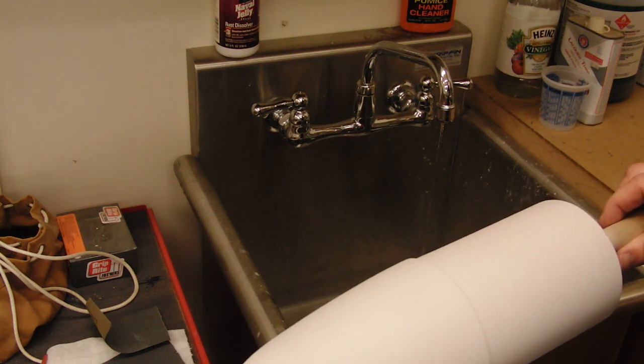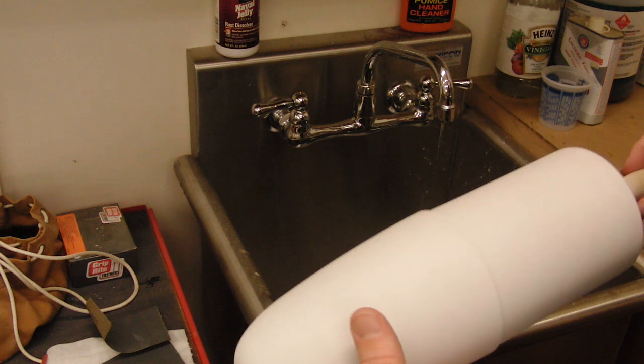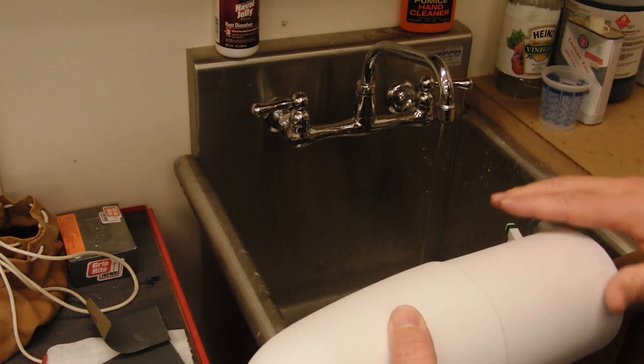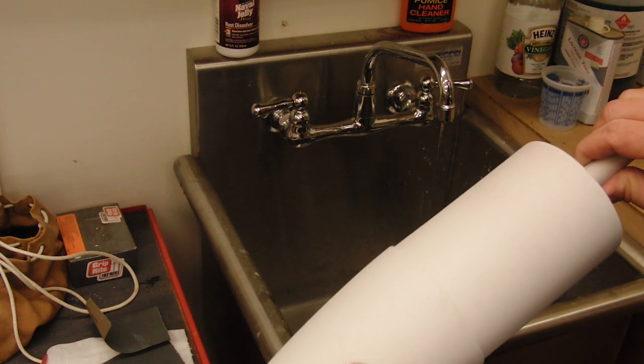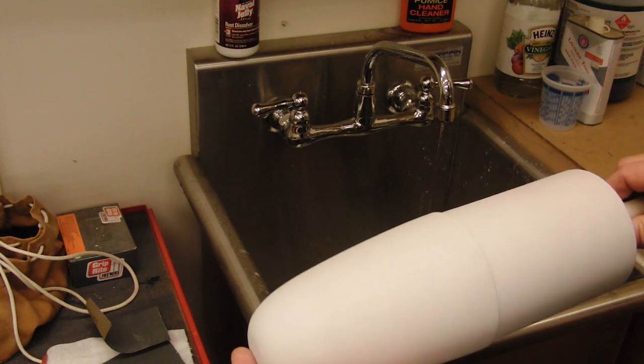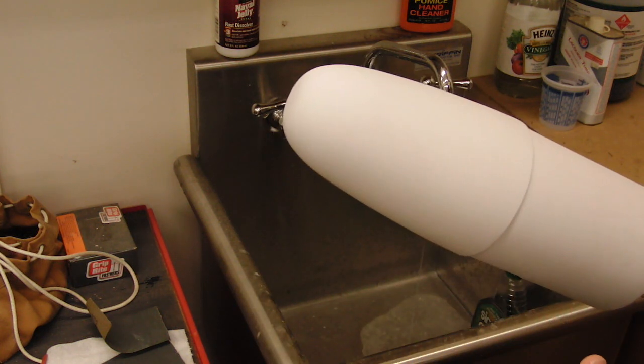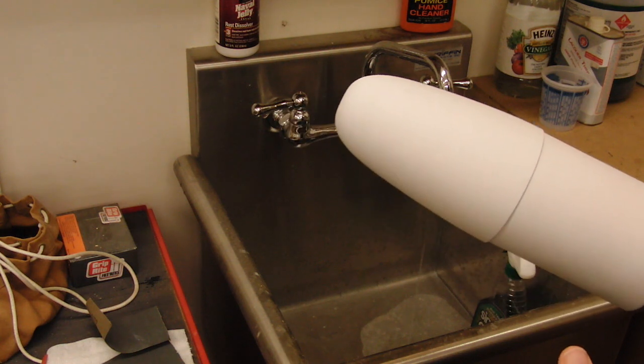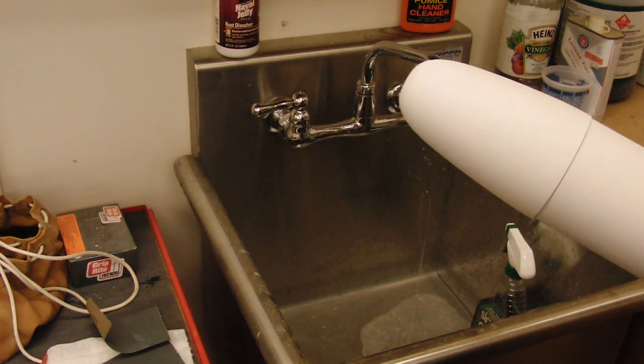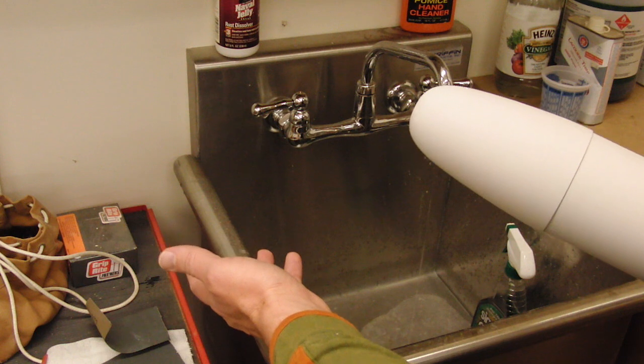I prefer to wet sand when I can, and because we sealed the wood with epoxy, we can wet sand. So, we'll go through a succession of papers. This is freshly primed after a few alternations of priming and filling. I'm going to start with 220, 320, and then finish up with 400.